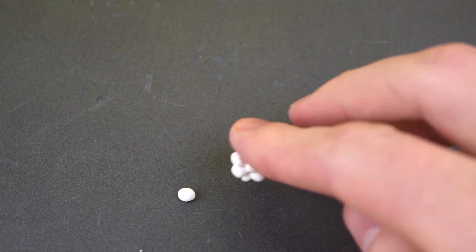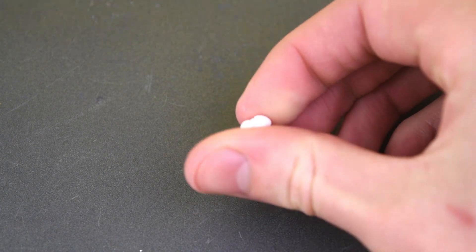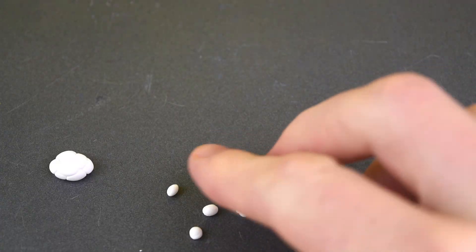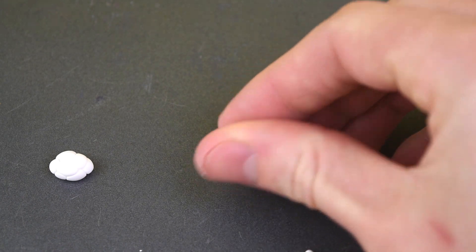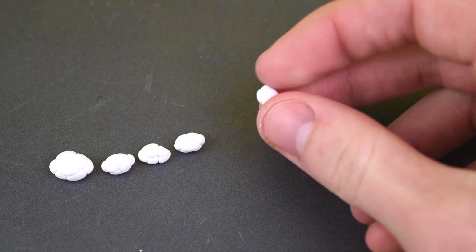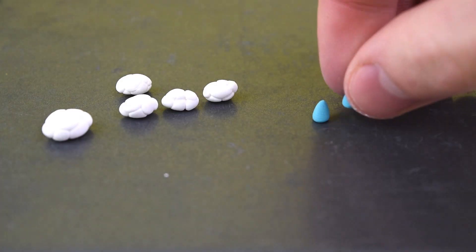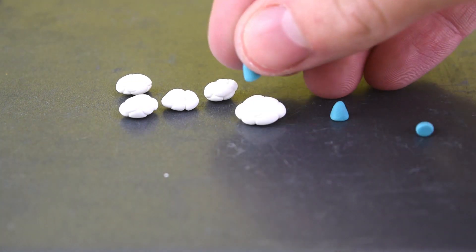Now again, with a bunch of balls of clay, we're going to be creating the clouds. Except this time, we're going to roll them together not as much as the trees, because we want it to be very, very puffy.